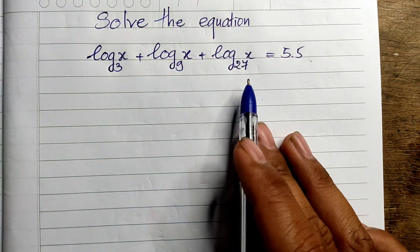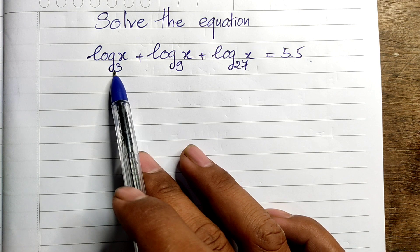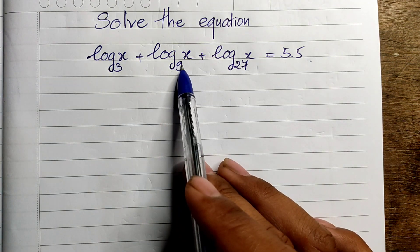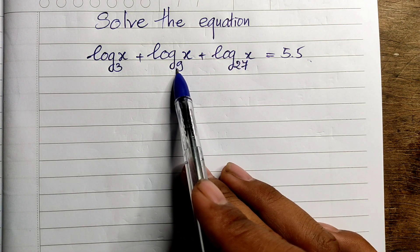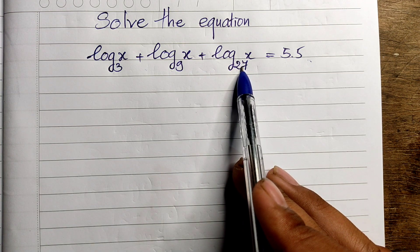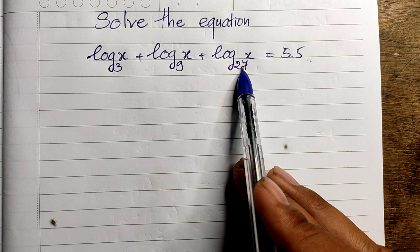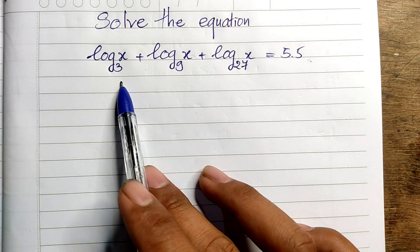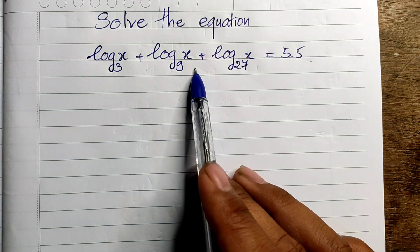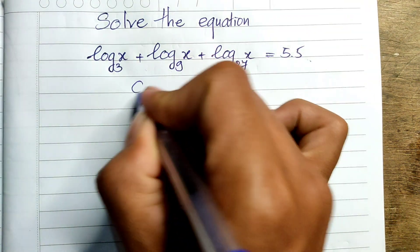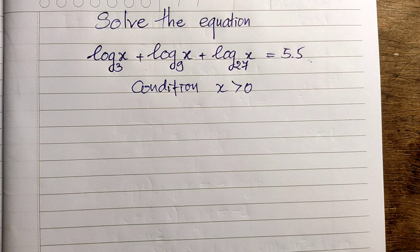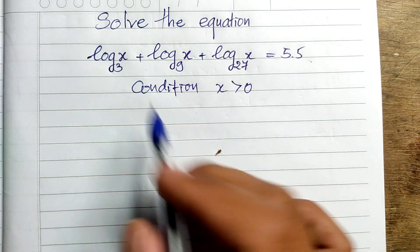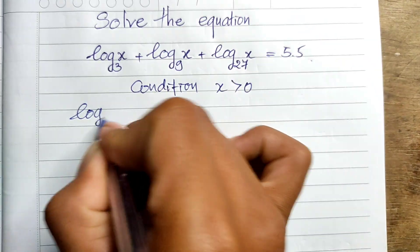We have this equation with different bases: base 3, base 9, and base 27. But we know that 9 equals 3 squared and 27 equals 3 to the power 3. Before we solve this equation, we must state the condition. The condition is that x must be positive.